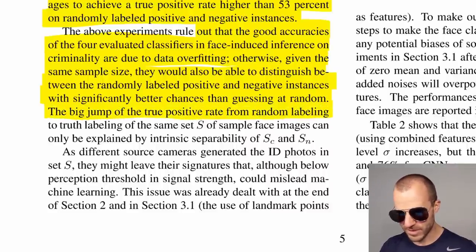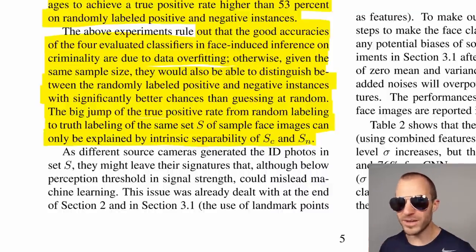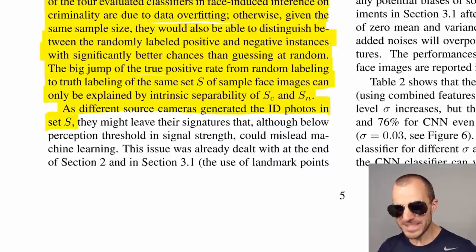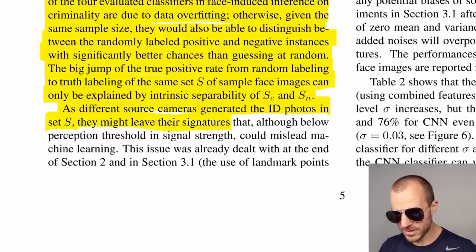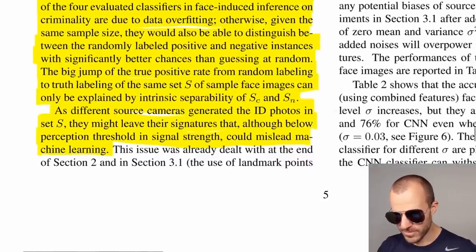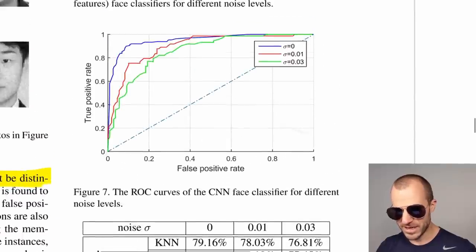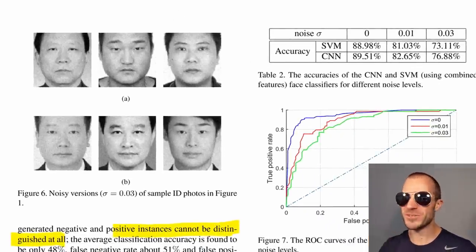They say: 'The big jump of the true positive rate from random labeling to truth labeling can only be explained by intrinsic separability of SC and SN.' That is true. But why are they separable? They raise the point that different source cameras generated the ID photos in dataset S, and those cameras might leave signatures that, although below human perception threshold, could mislead machine learning. They try to rule this out by adding noise to the images to wash out camera artifacts — and the noise doesn't change their results. They were so close to actually doing something useful.